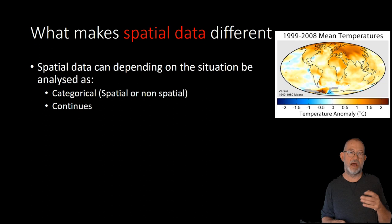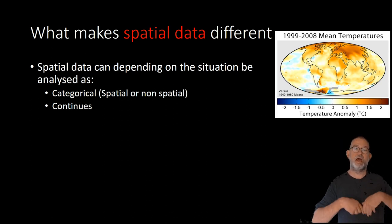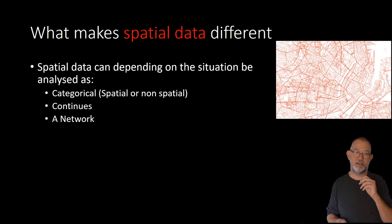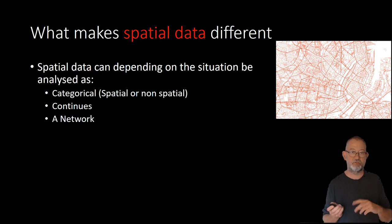We can also look at space as continuous. So, as we walk over the surface or fly over the surface of the Earth, it is one continuous surface. So, we can look at variations in the mean temperature as a continuous function of location. We can also look at spatial data as networks that we can navigate through. So, we can follow the roads, turn right, turn left, and so on. So, we have these three important ways of looking at spatial data as categorical. So, entities, municipalities, as continuous, when we look at the mean temperature, or as networks.